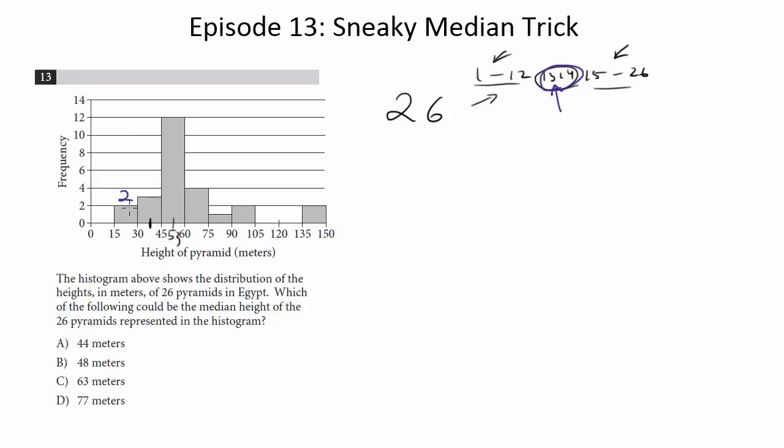So we have two numbers right here. Here are the first two. Here are the next three. So the first five numbers are in this set. Then we add 12. So notice we're going from 5 all the way to another 12. So the first 17 numbers are accounted for in this set of numbers. And notice our 13th and 14th are going to be somewhere in this bar. So that means our median is going to lie somewhere within the range of 45 to 60, which is why the answer ends up being B.